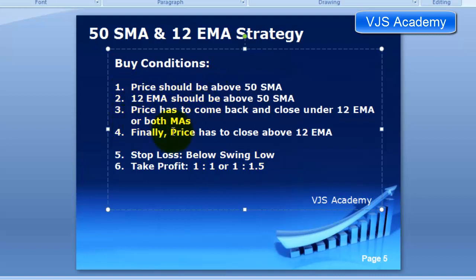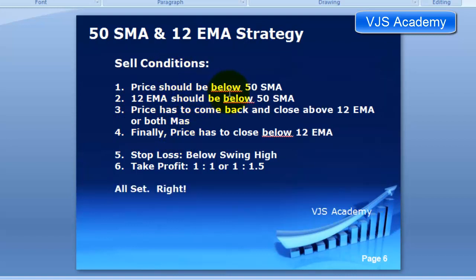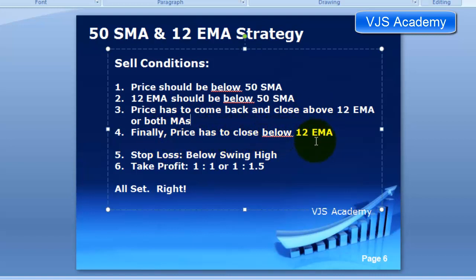If you want to sell: price should be below the 50 SMA, the 12 EMA should be below the 50 SMA, price has to come back and close above the 12 EMA or both moving averages, and finally price has to close below the 12 EMA. Stop loss is below the swing high and take profit is 1:1 or 1:1.5. You wait for all these conditions to be met first, and then you trade — with your stop loss and target defined.